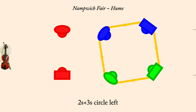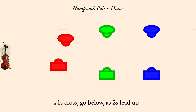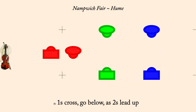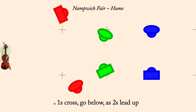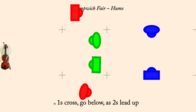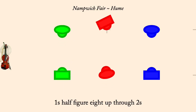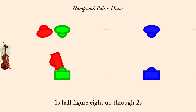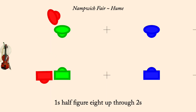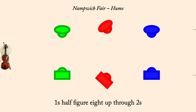Ones cross, go below, as twos lead up. Ones half figure eight up through twos. Ones and twos, four changes of rights and lefts.